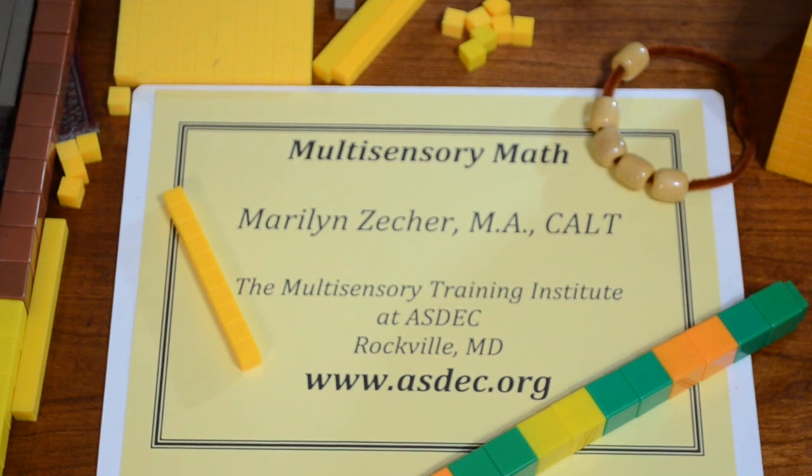This is an exercise used in multisensory structured language in which the student is asked to change individual phonemes and then blend into a syllable or word. The teacher might say, show me ah. If that's ah, change ah to at. If that's at, change at to pat. If that's pat, change pat to pet.